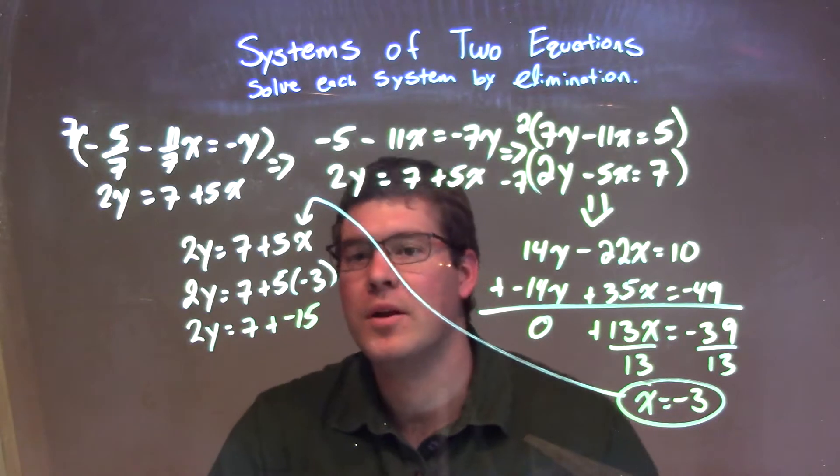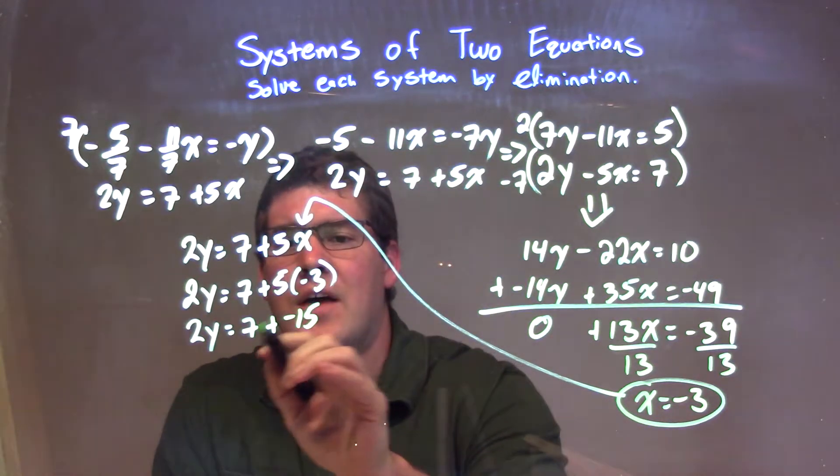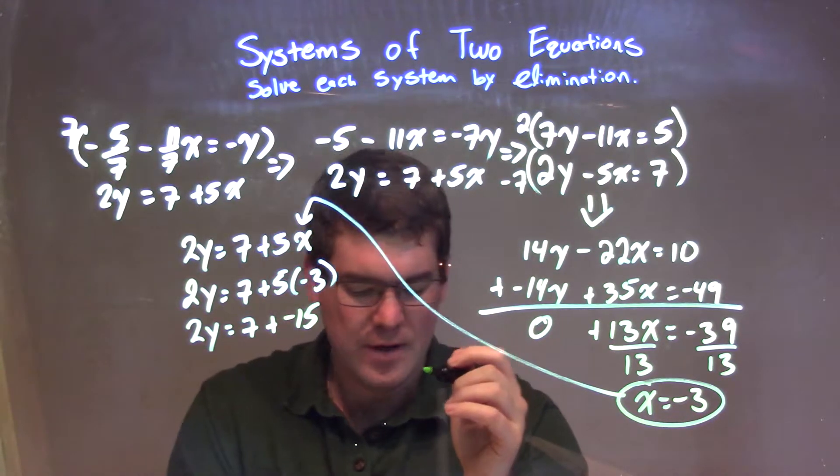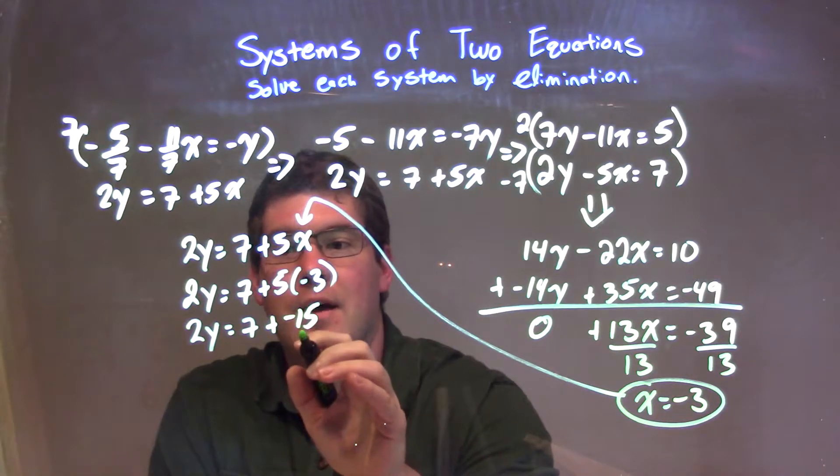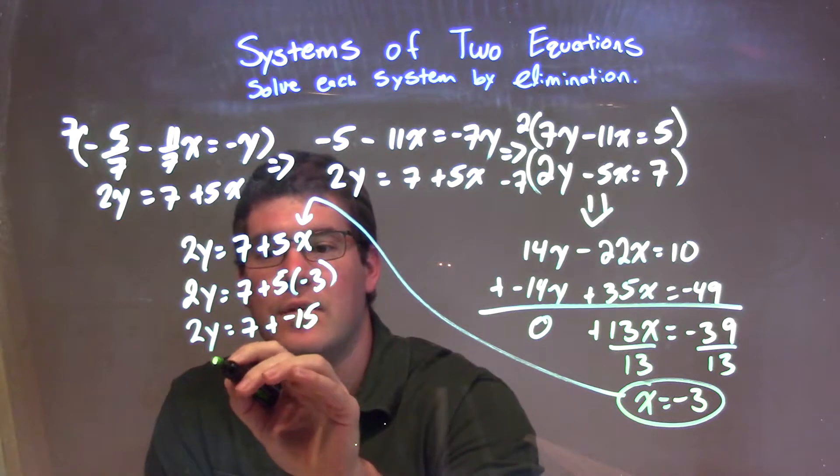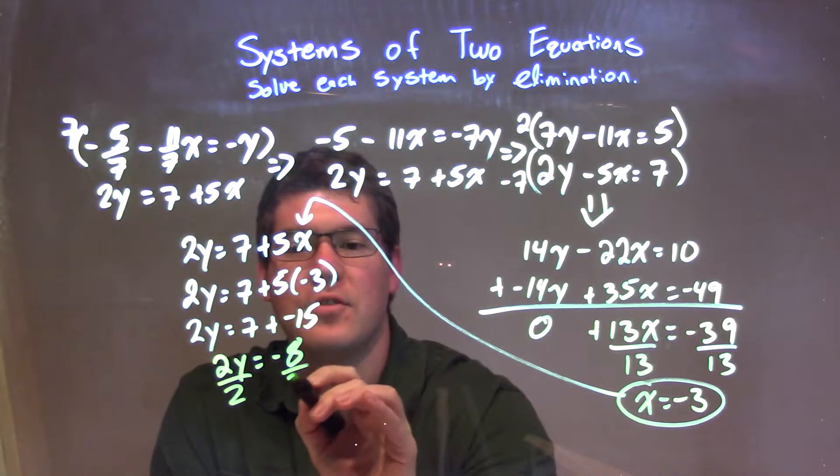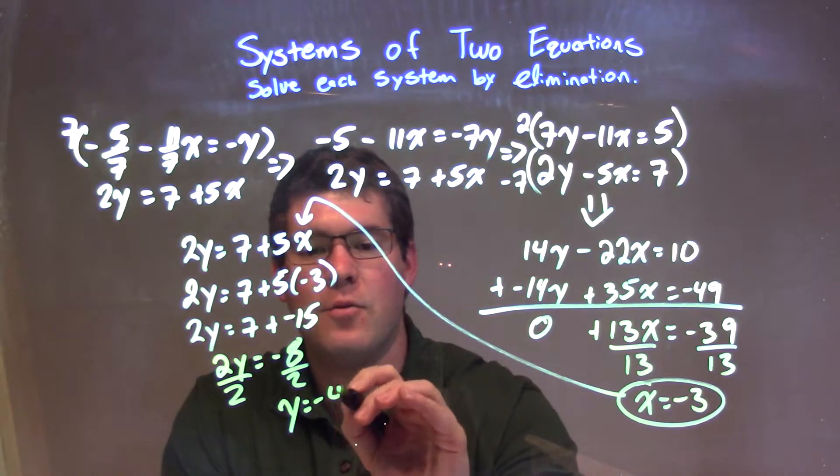What we're going to do now, keep going. 7 plus negative 15 is negative 8. So we have 2y equals negative 8. I'm going to divide both sides by 2, which leaves me with y by itself equals negative 8 divided by 2, which is negative 4.